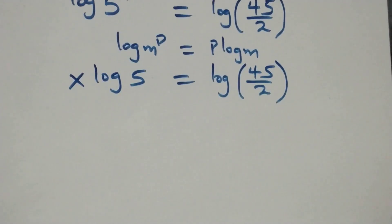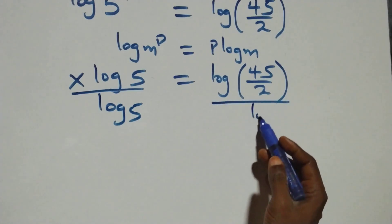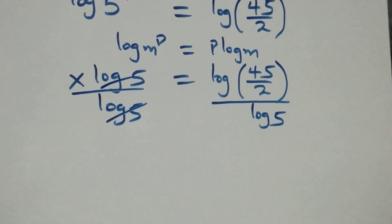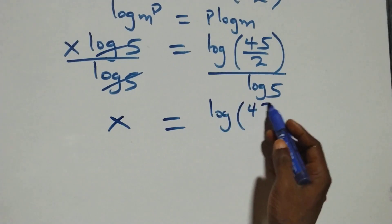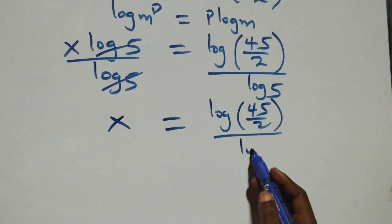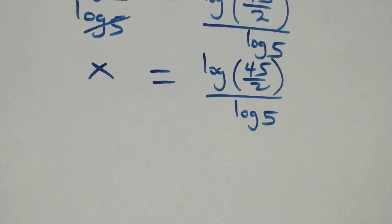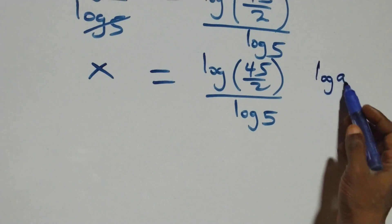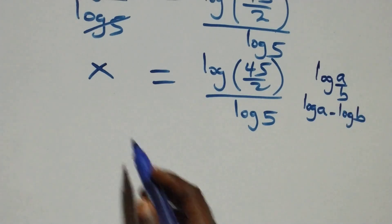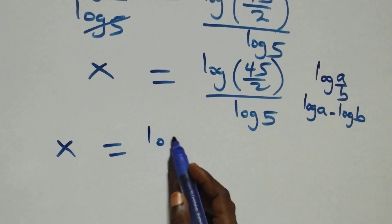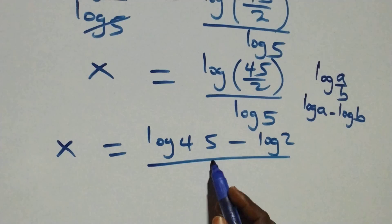Next step, we divide both sides by log 5. Log 5 cancels each other, and we have x left, which equals log 45 over 2, divided by log 5. This follows from the law of logarithm where log a over b is the same as log a minus log b. So x equals log 45 minus log 2, all over log 5.